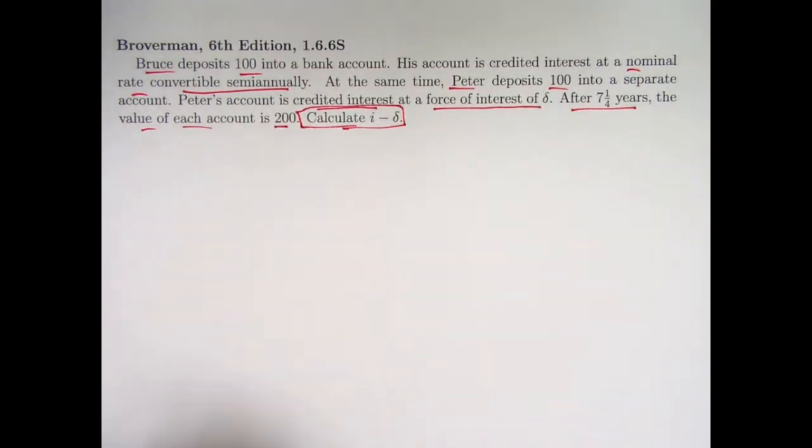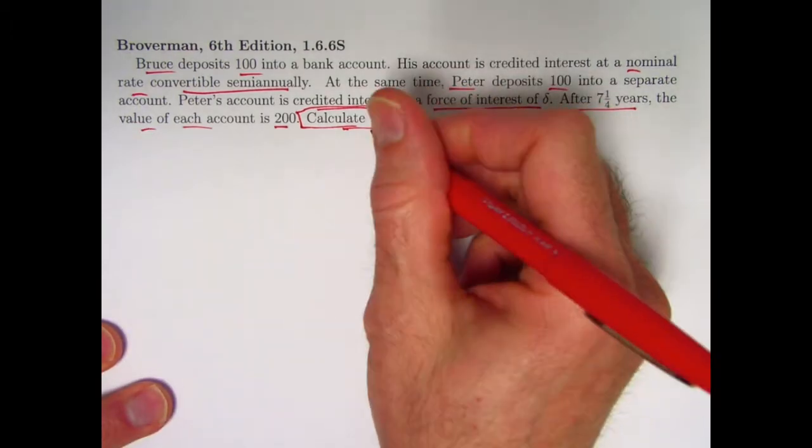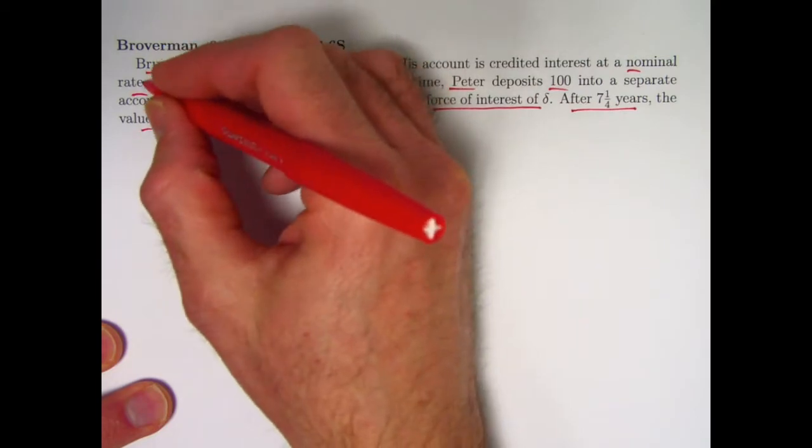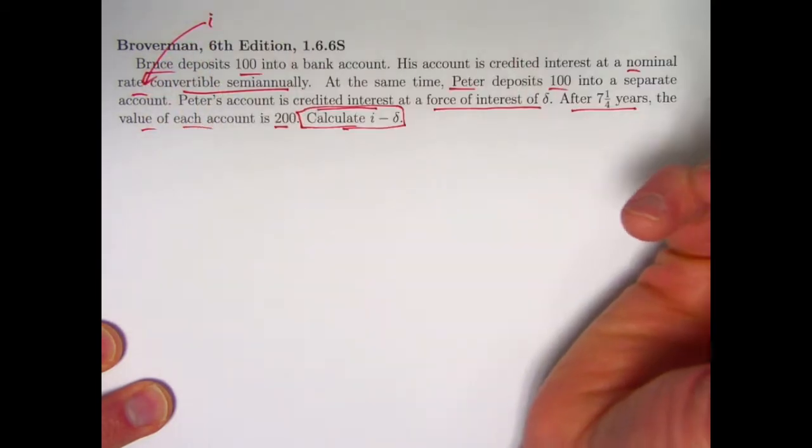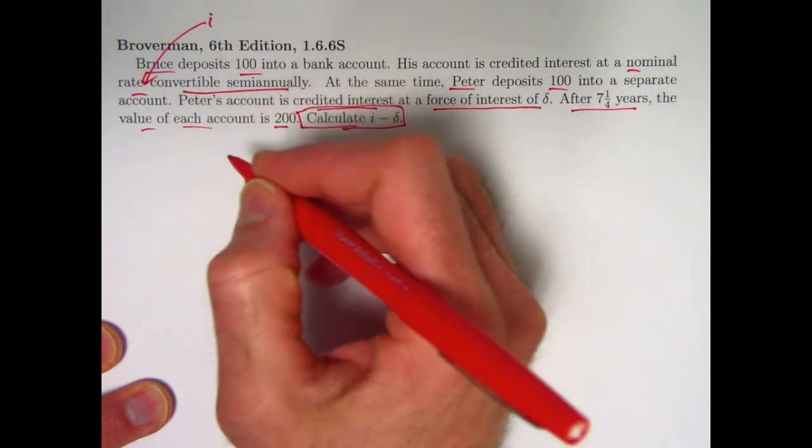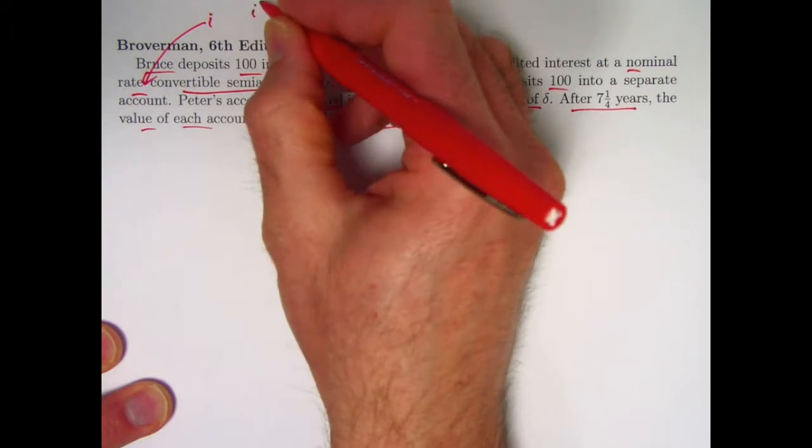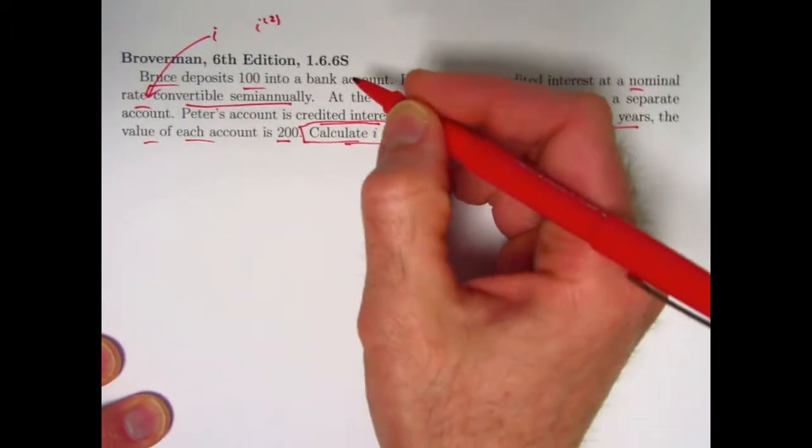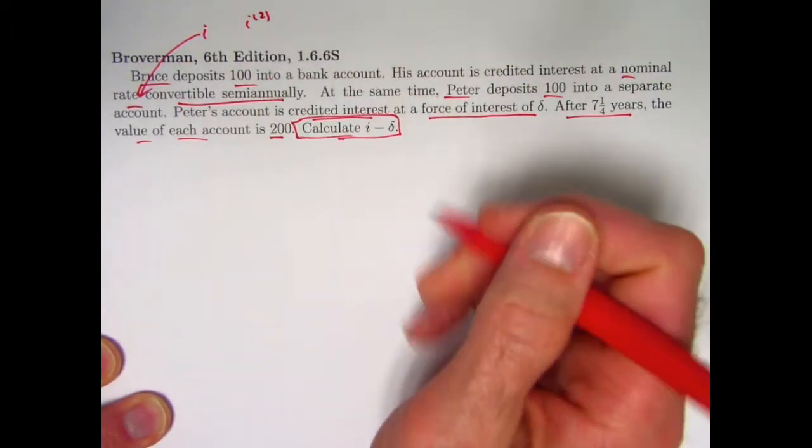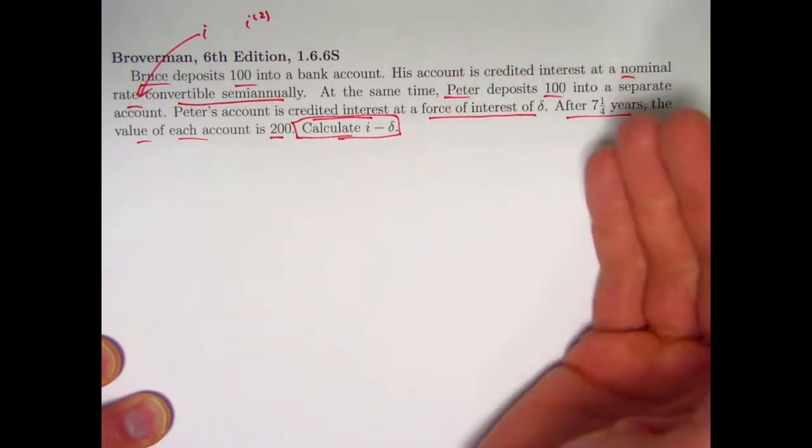All right, so how is this not written ideally? Well, the first question that I hope pops into your mind is, what is I? Is I supposed to be the nominal rate that maybe they should have written in there? Nominal rate of I convertible semi-annually, which would more typically be written as I2 for a rate that's a nominal rate convertible semi-annually. Or is I supposed to be the effective annual rate?